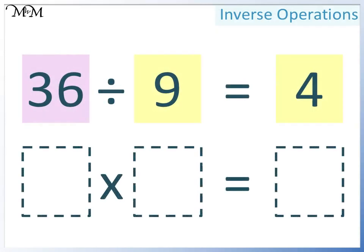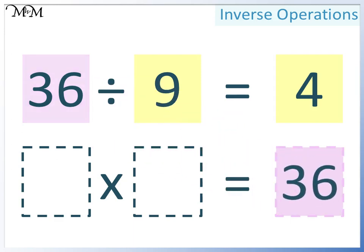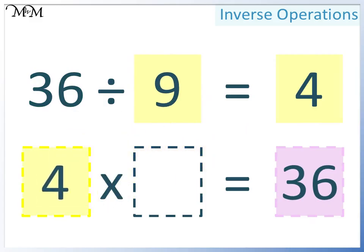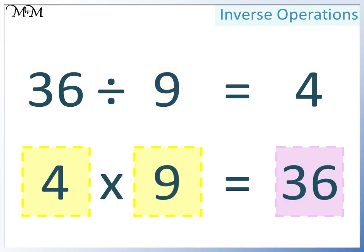Again, 36 must go here. This time we'll write 4 here, and so 9 must go here. 4 times 9 equals 36.